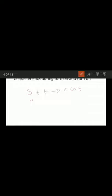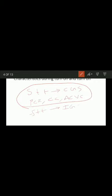Examples of converter grade SCRs (slow turn-off time) include phase-controlled rectifiers, cycloconverters, and AC voltage controllers. Thyristors with fast turn-off time are called inverter grade SCRs. Examples of inverter grade SCRs include inverters, choppers, and forced commutation converters. This concludes today's class.